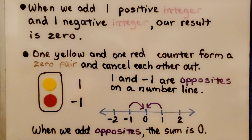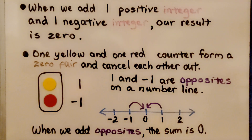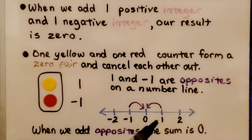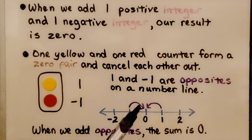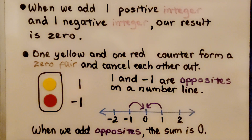When we add one positive integer and one negative integer, our result is zero. One yellow and one red counter form a zero pair and cancel each other out. One and negative one are opposites on a number line — they're each one jump from zero. When we add opposites, the sum is zero. We create a zero pair.